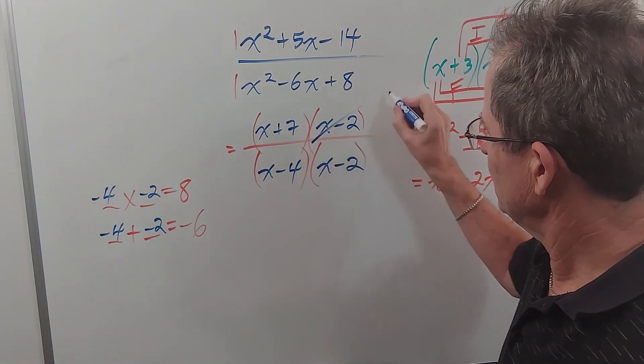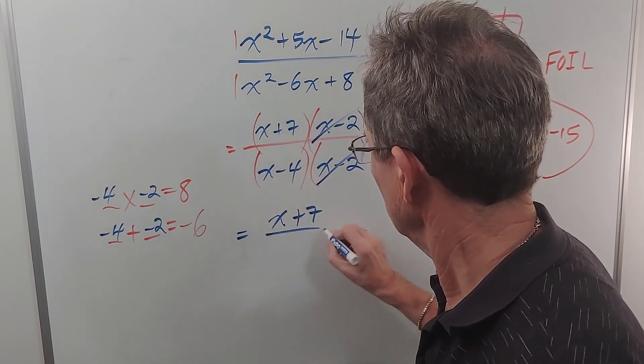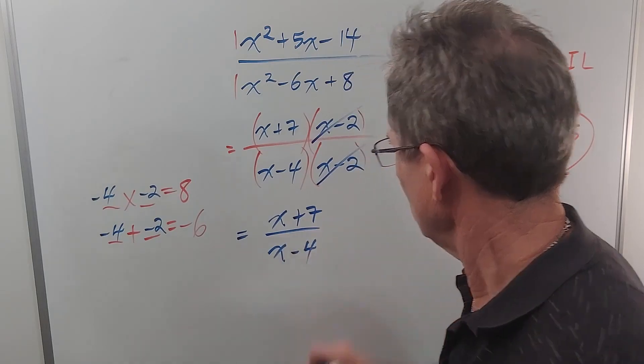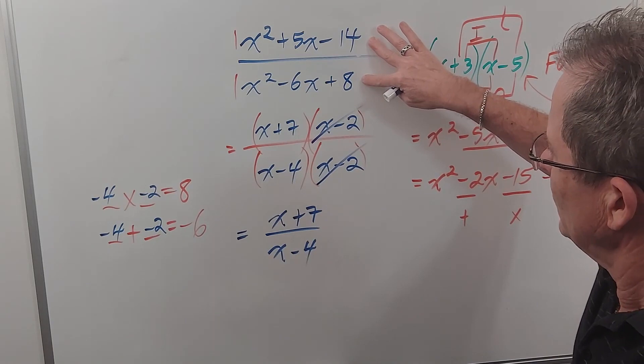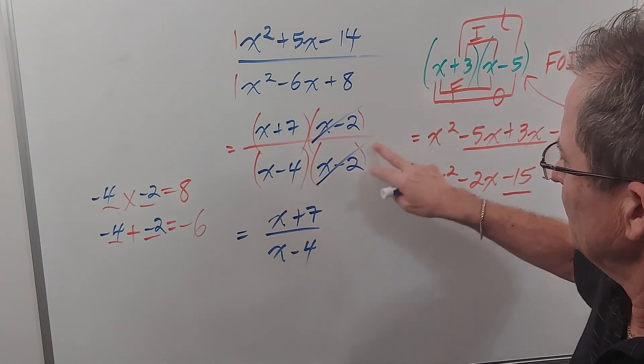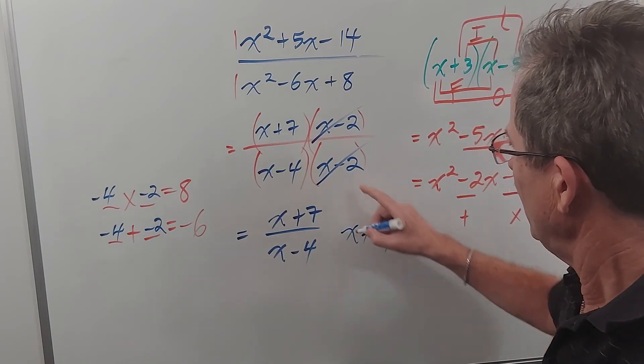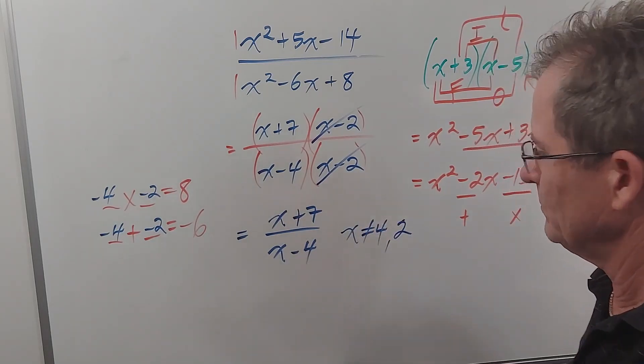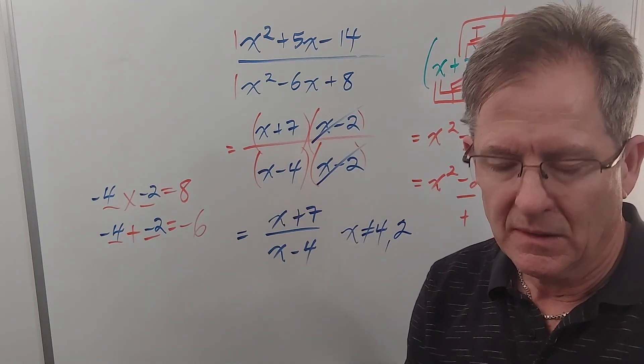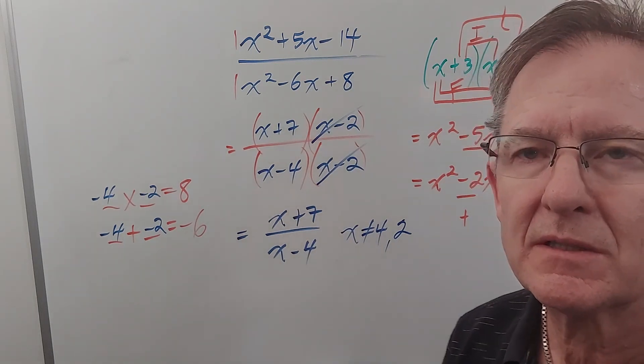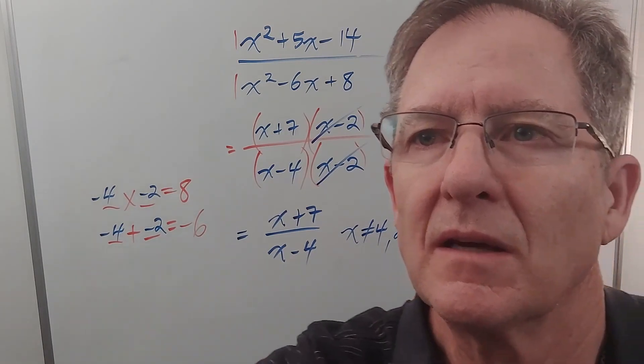And now you can see that these factors cancel, so the final answer is x plus seven over x minus four. If you're asked for the restrictions, don't look at the question, don't look at the final answer. Look at the factored form and you can see x cannot be four and x cannot be two. Okay, next time we'll look at some more rational expressions, I should say, that are special cases. See you next time.